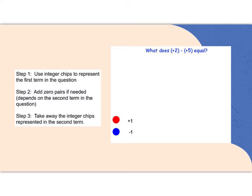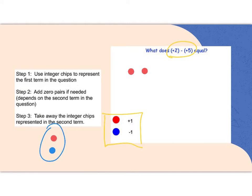Okay, this is a bit of a step up: positive 2 take away positive 5. Positive 2 is going to be 2 red dots, and I need to take away 5 red dots. The problem is I don't have 5 red dots, so I need to add a couple more. The only number I can add without changing things is 0. Having 1 red and 1 blue is what we call a zero pair, so I'm going to add zero pairs until I have enough.